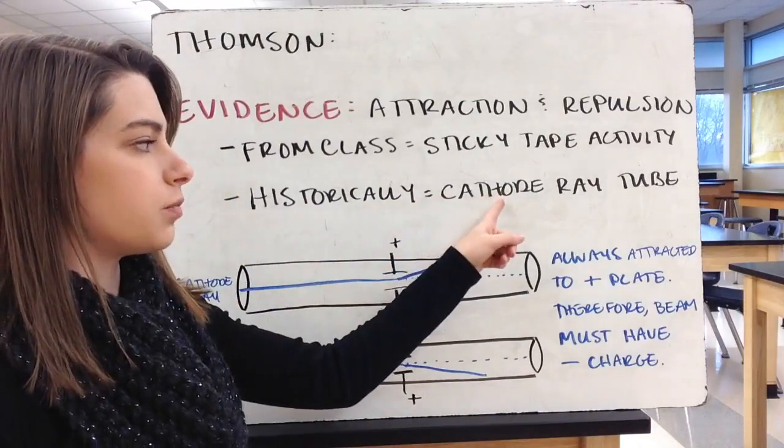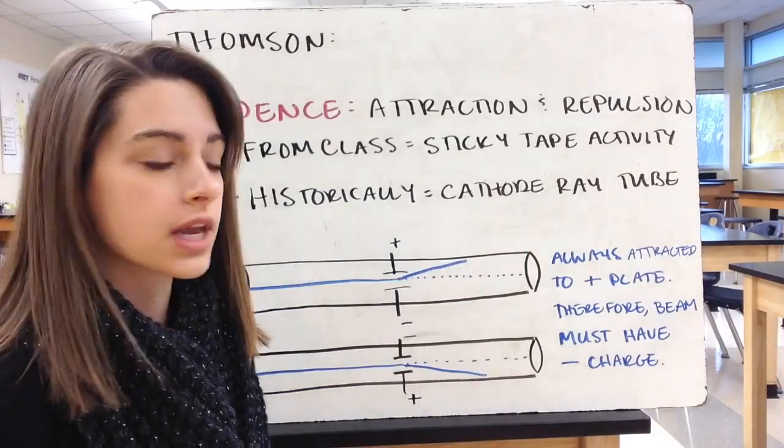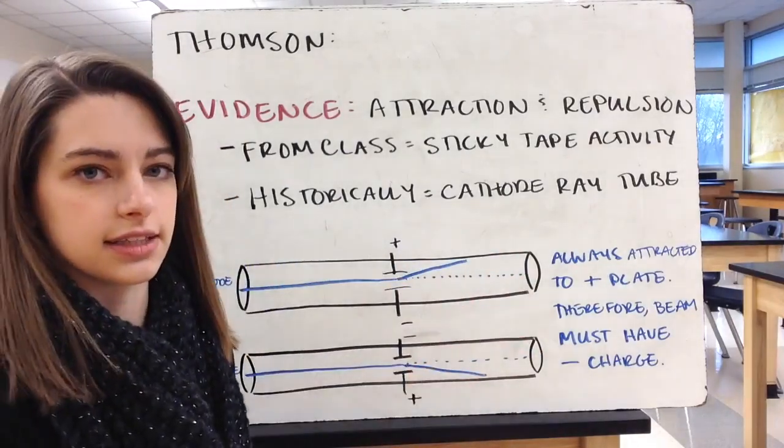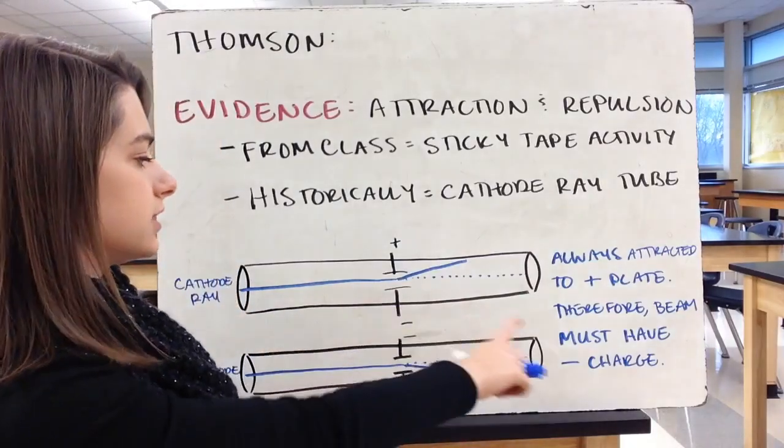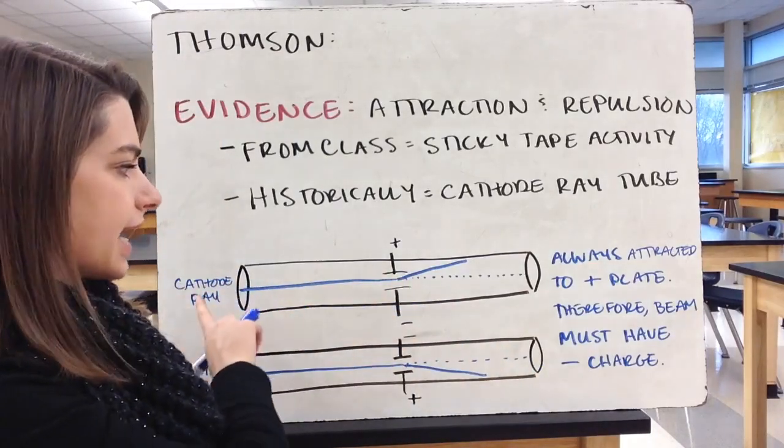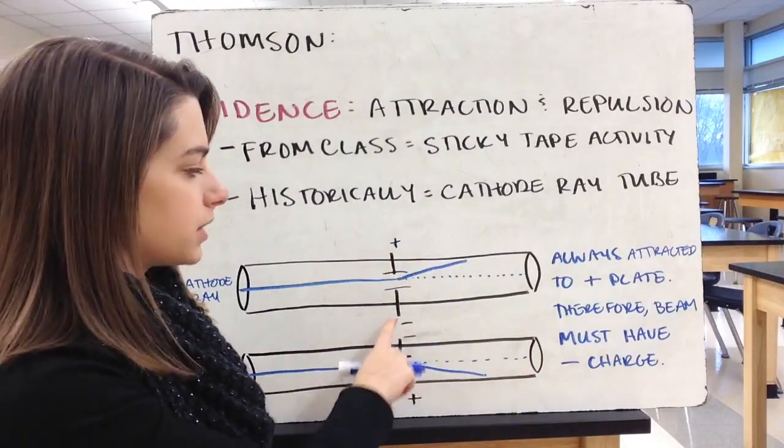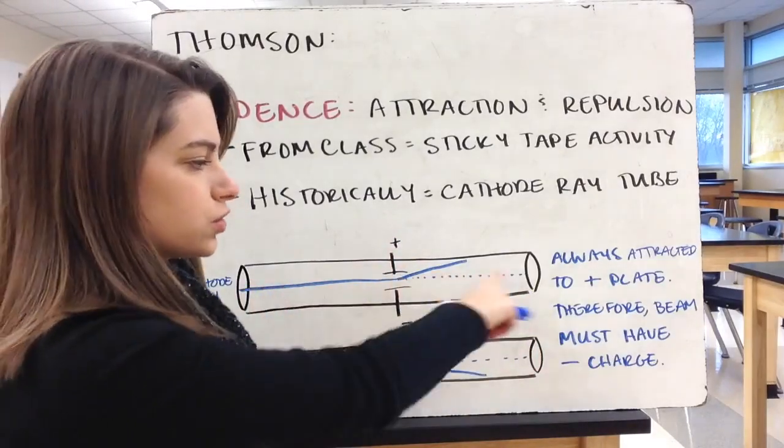Thompson saw this when he did work with a cathode ray tube. When he worked with this tube, it was a long tube. It didn't look exactly like this. I don't have drawing skills, so this is simplified. But he shot this beam, called a cathode ray, through the tube, and there were two plates. When the plates were not charged, the beam went straight through, right as he predicted.